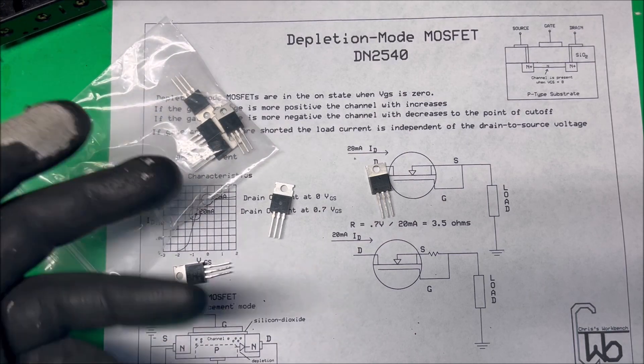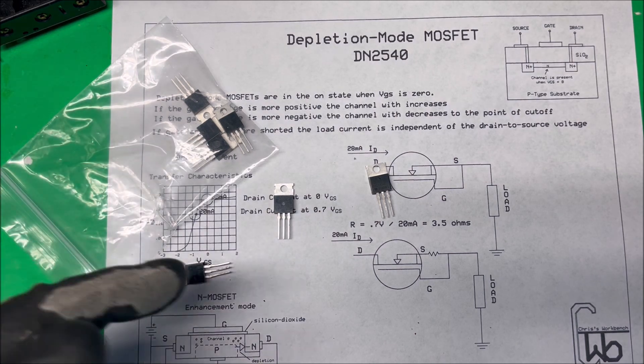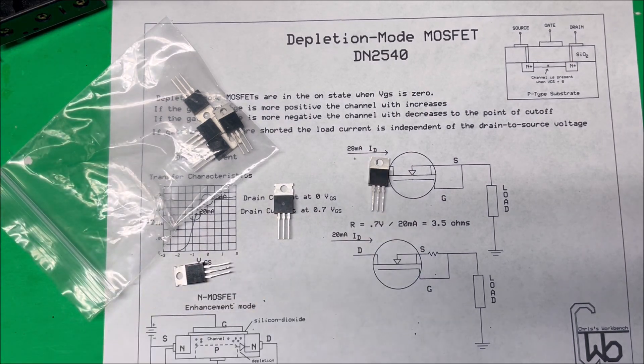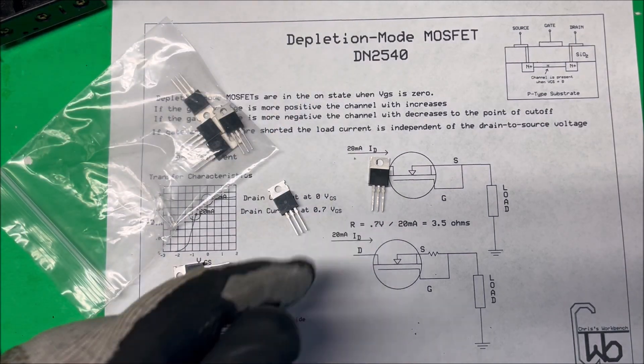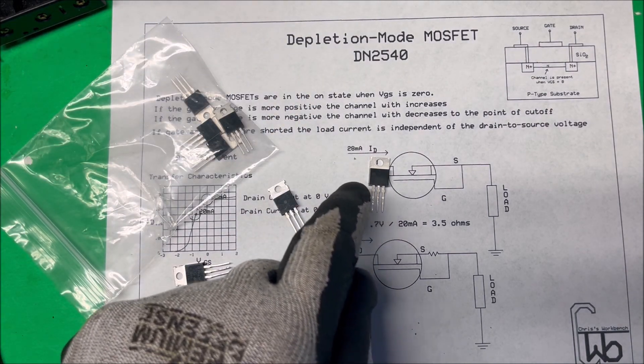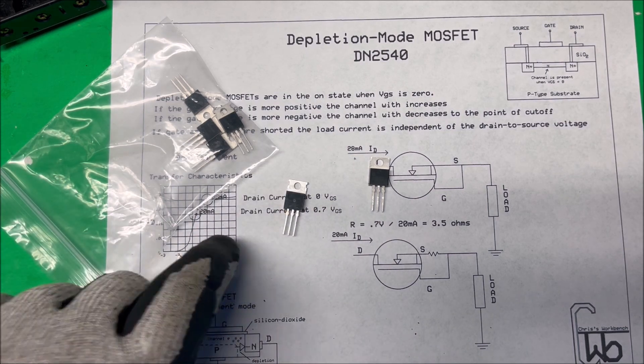They're just enhancement mode ones. They've got the right label written on there but they're fake. Here's the one I bought from Mouser. It comes in a proper package and took about four days to get here. The logo is engraved in this one. This one here is just printed on, and I should know better.